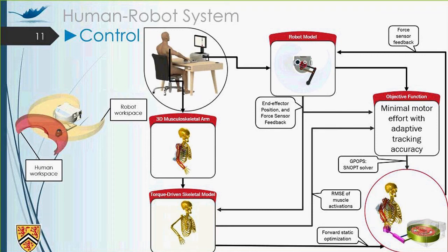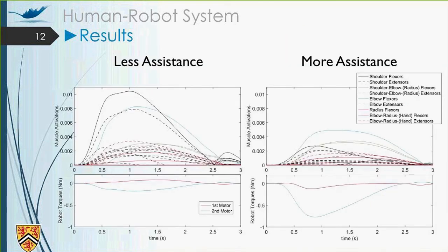So here, the torque-driven skeletal model solves forward static optimization. And from there, it provides the muscle activations and RMSE of the muscle activations. The first results of this simulation showed that when the patient has more activations of the muscle, the robot tries to reduce its help. As you see on the plot on the left, the robot torque has decreased when the activation of the muscle has increased. And on the right, when the activation of the muscle has decreased, the robot tries to help the patient. And it shows the efficiency of the controller for us.